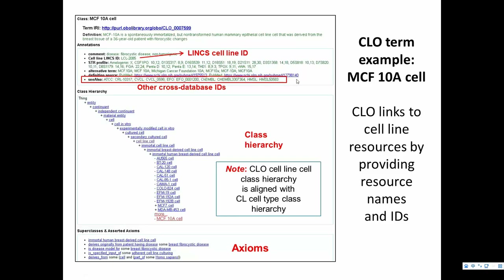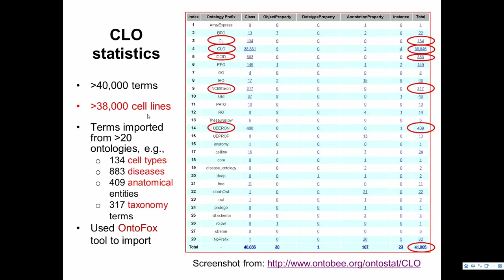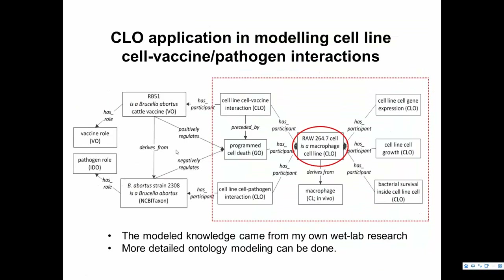We now have over 38,000 cell lines in the ontology. We incorporate the NCBI taxonomy for organisms — human, mouse, or others. We use Uberon for anatomic entities like bone or skin. We have disease ontology, so you can see which cell lines came from patients with specific diseases. We also have cell type ontologies. One example of how cell line ontology can be used is to model cell-medicine-pathogen interactions, representing how cell lines with specific markers interact with different agents.